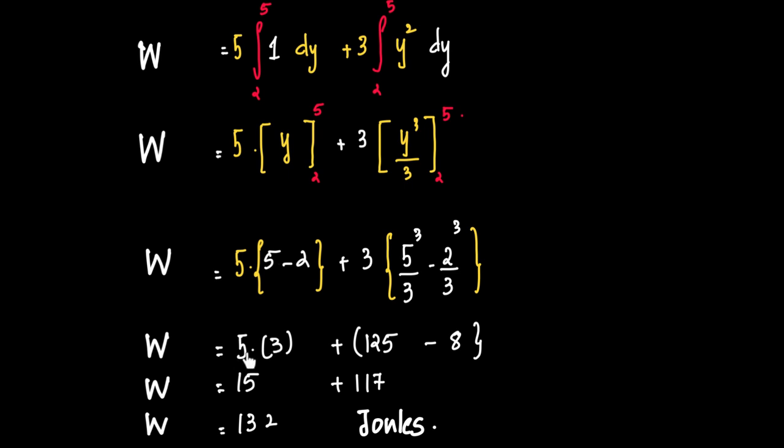5 minus 2 is 3, 5 into 3 is 15. 5 cubed, now 3 by 3 is 1. So 5 cubed is 125, 2 cubed is 8. 125 minus 8 is 117, 5 into 3 is 15. So 117 plus 15, we have work done is equal to 132 joules.